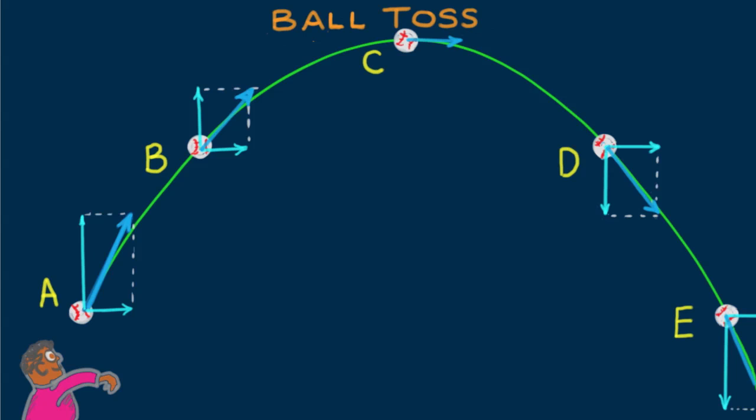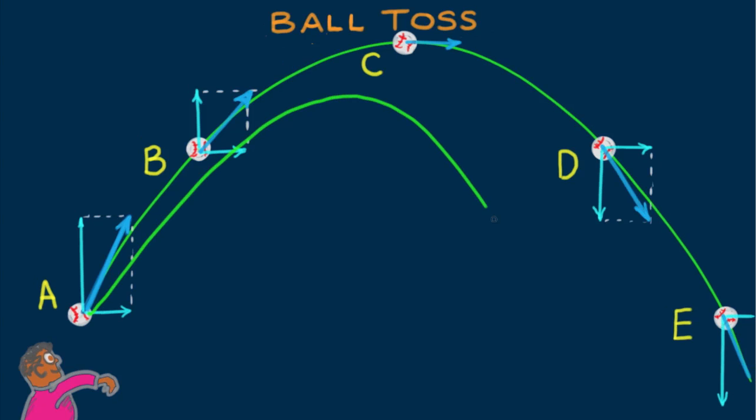With air resistance, the path is not parabolic. It's something like this. The horizontal component in each successive position becomes smaller due to air resistance. We just show the horizontal components here. These smaller components are why the ball doesn't go as far downrange. And air resistance vertically means the ball doesn't reach the same height.